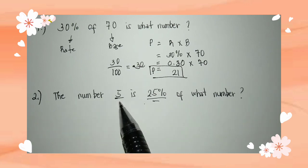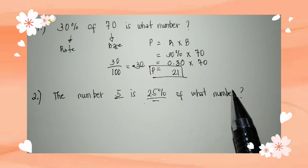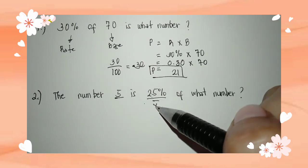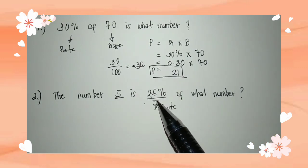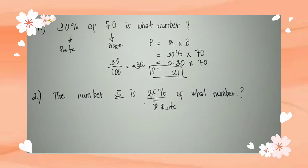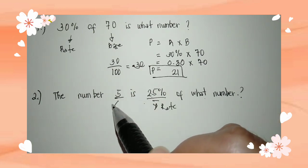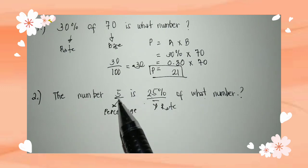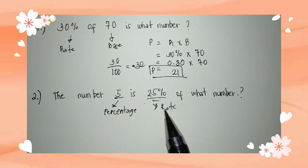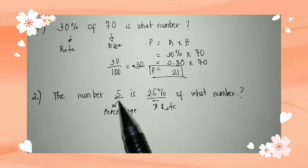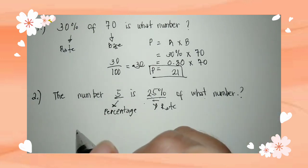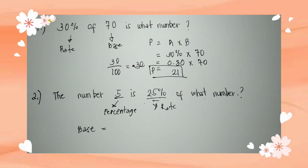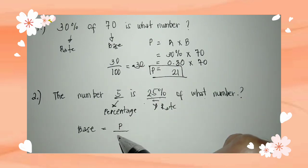Take a look at the next example: 'The number 5 is 25 percent of what number?' When you see a percent sign, that is automatically the rate. The number 5 is the 25 percent of some number — so 5 is the percentage, because it is the certain number that corresponds to the rate. The unknown is the base. The formula for base from the triangle is B equals P over R.